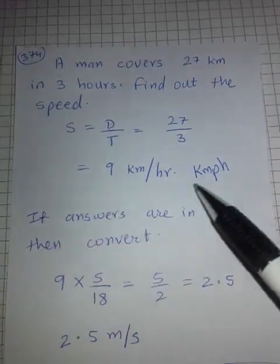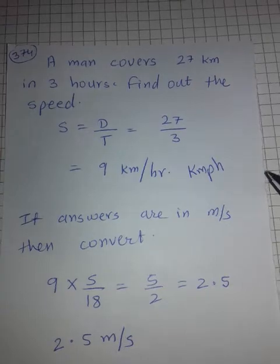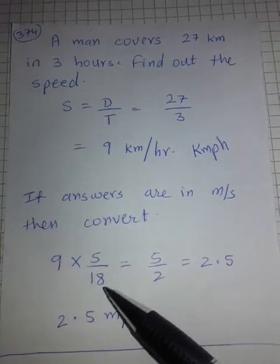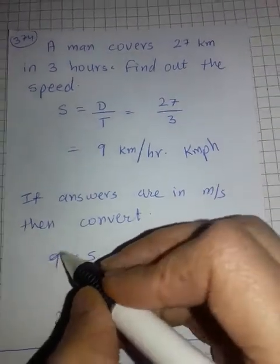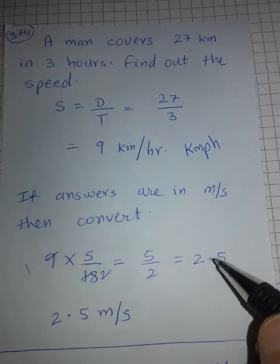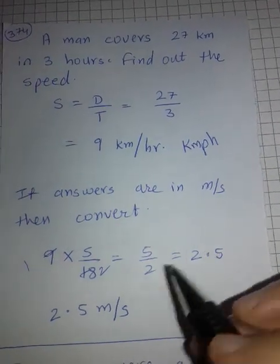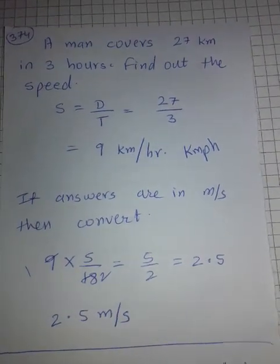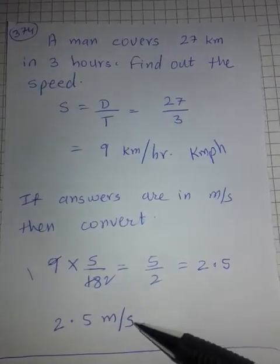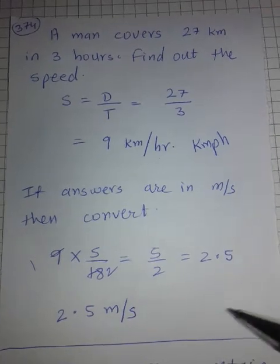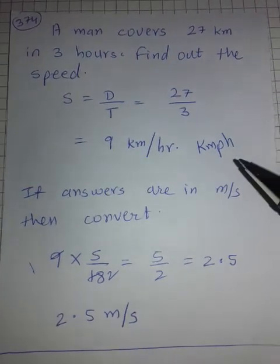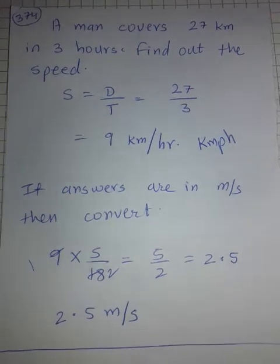But suppose the answer options are given in metres per second — then you need to convert. Multiply 9 km/h by 5/18: 9 × 5/18 = 45/18 = 5/2 = 2.5 metres per second. So the answer can be either 9 km/h or 2.5 m/s, depending on the units of the options given.